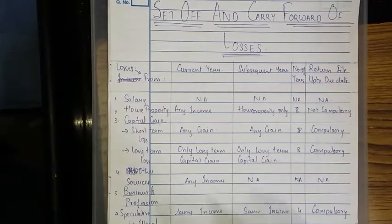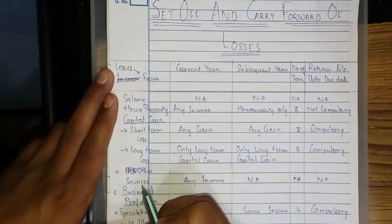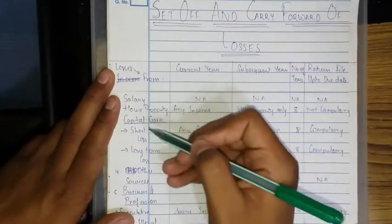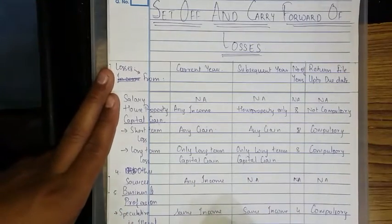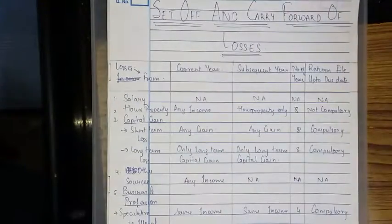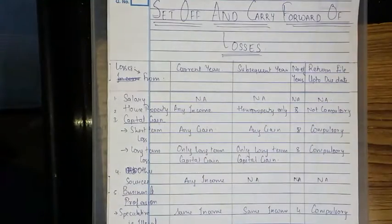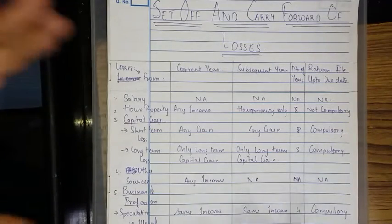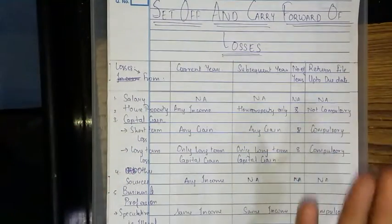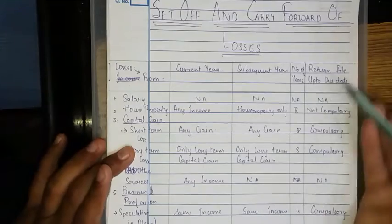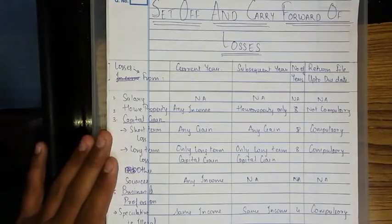Losses from other sources shall be deducted from any income — salary, house property, capital gain, business/profession, or horse race — any income. However, it can only be claimed for one year; it cannot be carried forward to subsequent years. Since other sources has no defined category, there is no basis for carry forward, so only one year is permitted. Number of years not applicable; return filing up to due date not applicable.